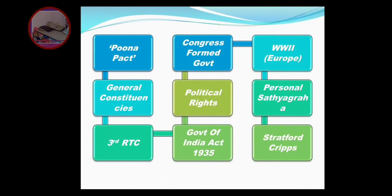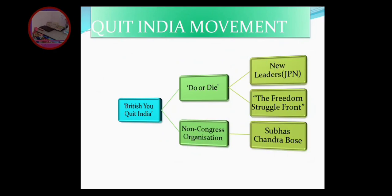The Quit India Movement was started. At that time, World War II was happening in Europe and the British said they needed Indian soldiers to go fight. Again satyagraha started. The Cripps Commission was sent by the British government to propose some suggestions - the commissioner came to mediate and said if you support in World War II we will help you. But Indians didn't listen and then they started the Quit India Movement.